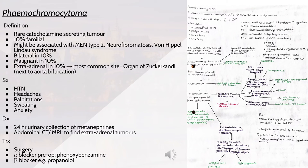Pheochromocytoma is a rare catecholamine-secreting tumour. It is 10% familial and may be associated with MEN type 2, neurofibromatosis or von Hippel-Lindau syndrome. It's bilateral in 10%, malignant in 10% and extra-adrenal in 10% of cases. The most common extra-adrenal site is the organ of Zuckerkandl, next to the aortic bifurcation. Symptoms include hypertension, headaches, palpitations, sweating and anxiety. Diagnosis is via 24-hour urinary metanephrines collection and abdominal CT or MRI. Treatment is surgery, with alpha blockers preoperatively and beta blockers such as propranolol.